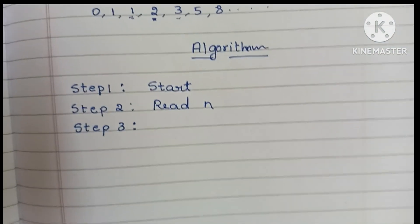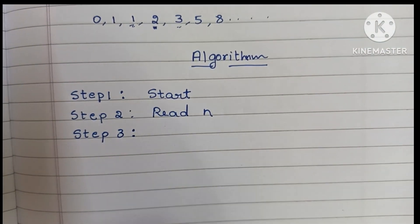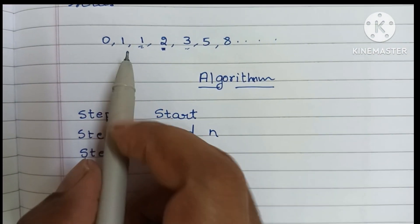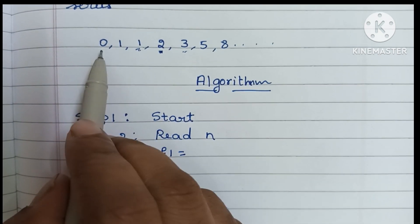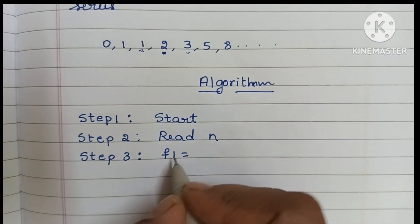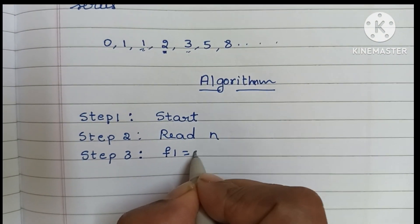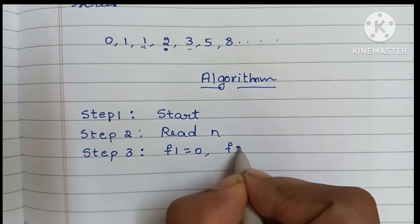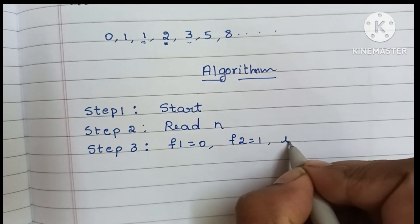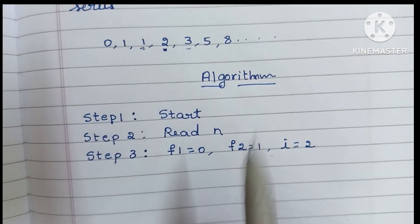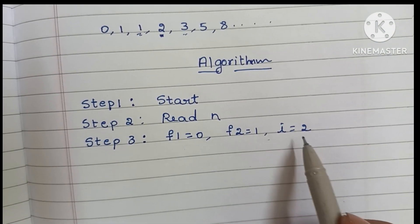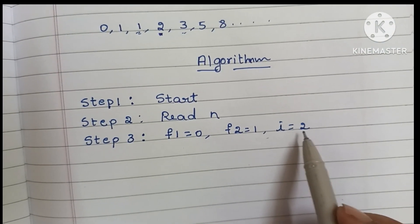Step 3: we declare and initialize the values. We know the first two numbers are 0 and 1, so we set f1 equal to 0, f2 equal to 1, and i equal to 2, because we are going to print the first two numbers already and i starts at 2.